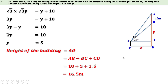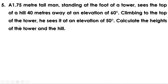Today let us do the remaining problems on page 122. Next problem: a 1.75 meter tall man standing at the foot of a tower sees the top of a hill 40 meters away at an elevation of 60 degrees. Climbing to the top of the tower, he sees it at an elevation of 50 degrees. Calculate the heights of the tower and the hill. The hill is taller than the tower because even after climbing to the top he sees the top of the hill at an elevation of 50 degrees.